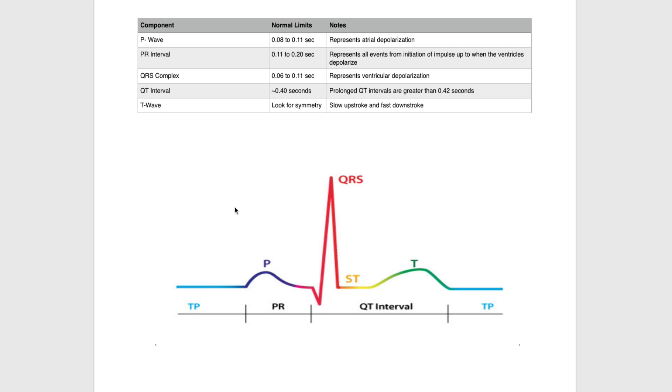First is the p-wave, shown down here in purple. The p-wave normal limits are 0.08 to 0.11 seconds. As you'll recall, on ECG paper a small box is 0.04 seconds and a large box is 0.20 seconds. The p-wave represents atrial depolarization, or the contraction of the atria in the heart.